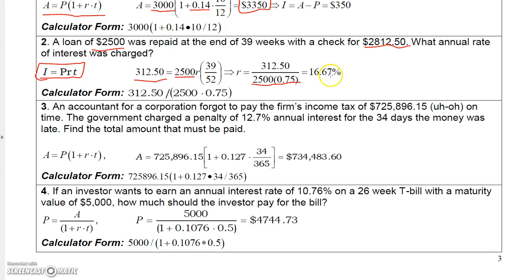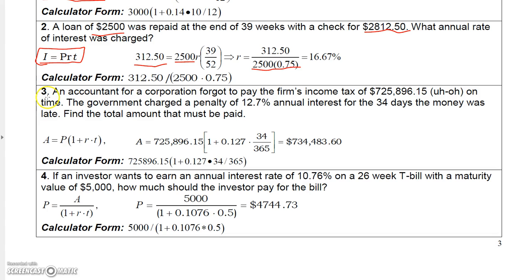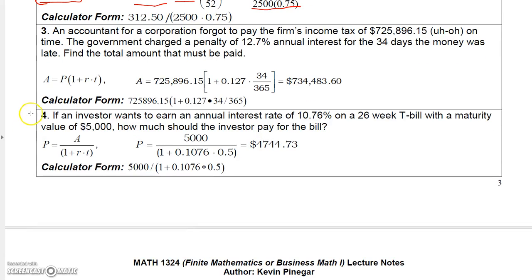Number three, you can pause the video and read that one. It's done just like number one. Number four, we have an investor wants to earn an annual interest rate of 10.76% on the 26-week treasury bill with a maturity value of $5,000. How much should the investor pay for the bill?